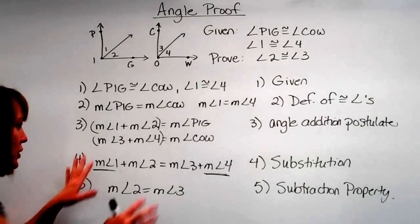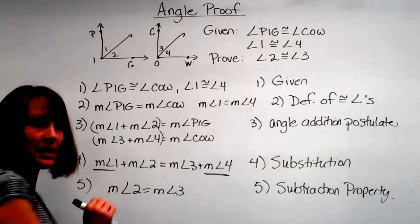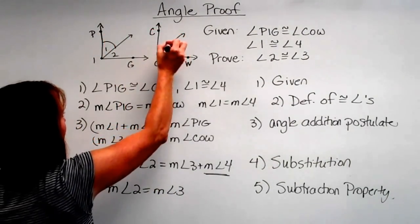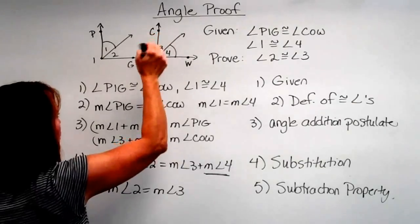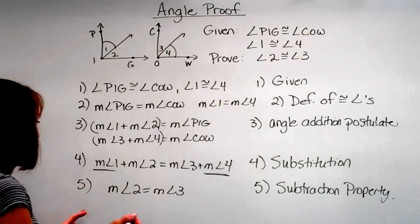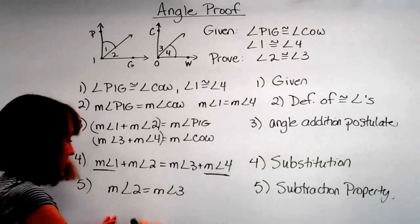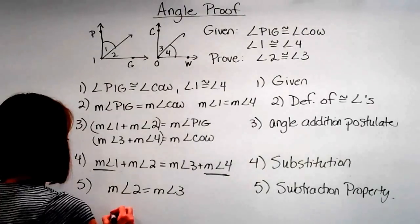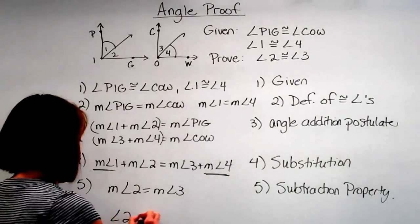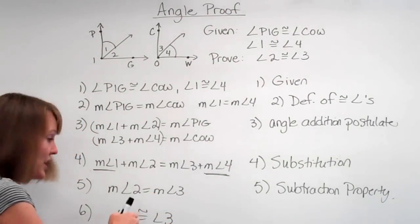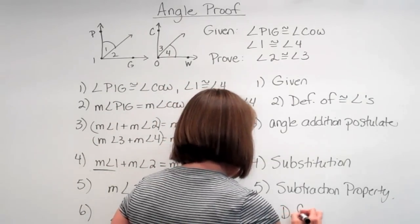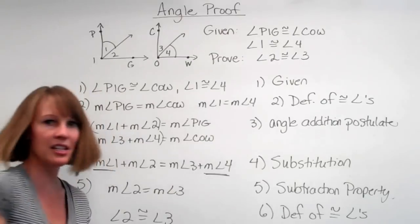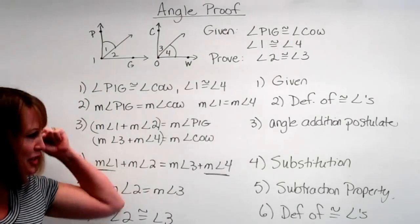That's what we're going for — once we subtracted those pieces out, the remaining pieces must be equal. If angle one equals angle four and the big angles are congruent, what's left must also be congruent. Now how do we go from 'the measures are equal' to 'the angles are congruent'? Definition of congruent angles. So we can say angle two is congruent to angle three because their measures are equal, by the definition of congruent angles. We proved what we needed — put your box, and you know you love math.